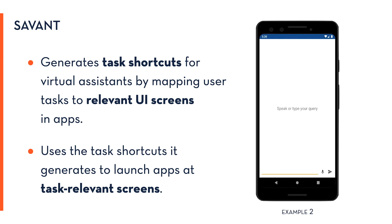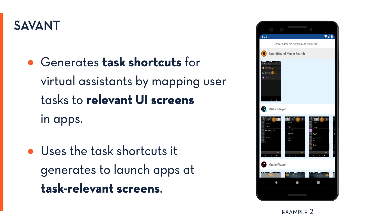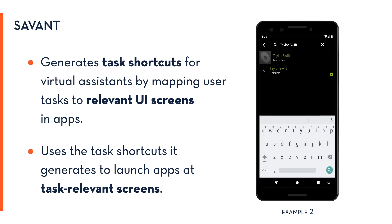In this next example, we see that Savant is able to perform slot filling. When given the task description 'show me songs by Taylor Swift,' Savant uses intent modeling to parse the entity and maps it to the relevant UI input.